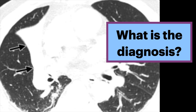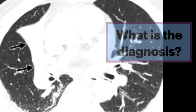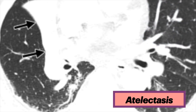What is the diagnosis? This CT on lung windows shows increased attenuation in the affected part of the lung with volume loss. Note how the fissures are tethered inward towards the opacity. This was atelectasis.